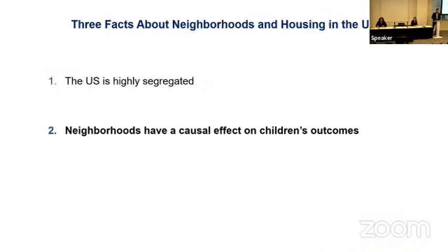So that's the first fact: there's a lot of segregation, both in terms of the characteristics of people living in different places and in the variation in outcomes of children raised in those neighborhoods. The second fact I want to turn to is that these neighborhoods have a causal effect on children's outcomes. You might think that geographic variation in where people live and concentration may not be a concern to a market designer — that people just have different preferences and are sorting efficiently. I'm going to argue that's not what's going on. A lot of the geographic variation we see in different rates of upward mobility reflects the effects of growing up in those areas.